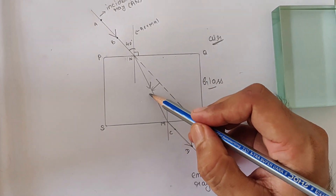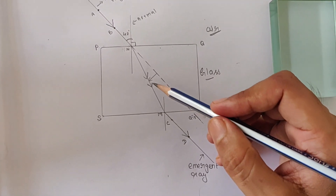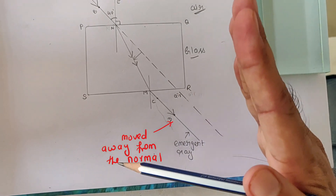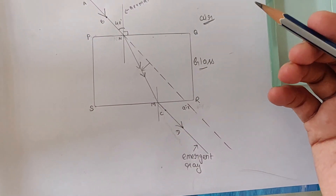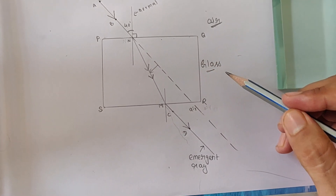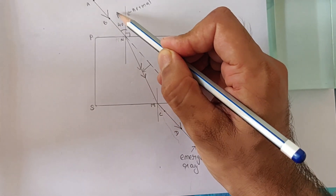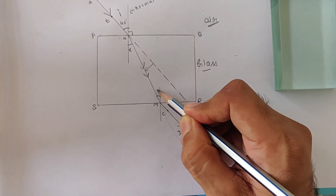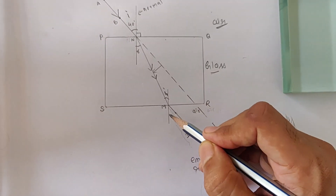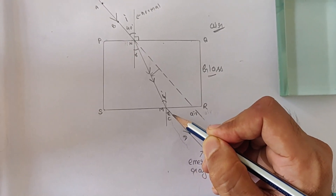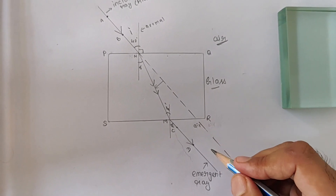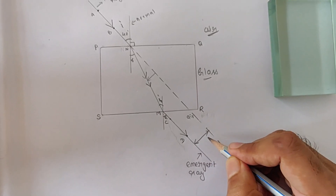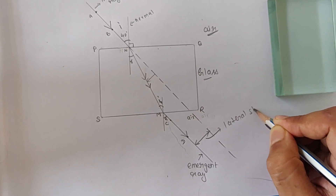From the glass slab back into air, the light was supposed to continue straight but instead it has moved away from the normal — this is the second refraction. We take the angle of incidence as i, the refraction angle as r, and the emergent angle as e. The shift of light from its original path is called the lateral shift.